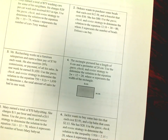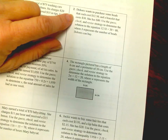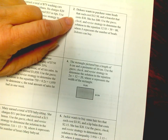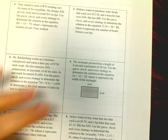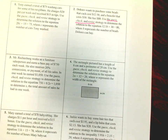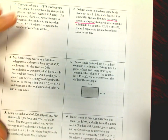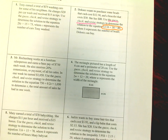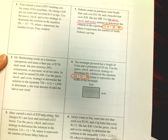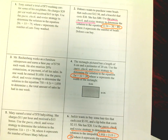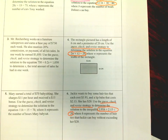Inequalities and equations. Dolores wants to purchase some beads that each cost $12.50 and a bracelet that costs $30. She has $80. Use the guess and check strategy — we're going to do exactly what we've been doing on all of these. You're going to have to guess and check unless told otherwise in class. Show three numbers, guessing and checking, to prove them right or wrong.